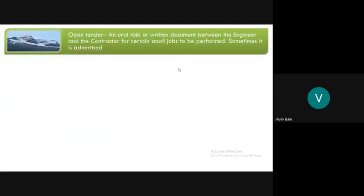Moving on to the types of tenders: the first type is open tender. This type of tender is issued when the sources are many and the value is large. Everybody who is willing to supply the required material can quote their prices in response to this tender. Open tender can also be an oral or written document between the engineer and the contractor for certain small jobs to be performed, and sometimes it is advertised.